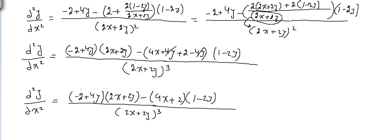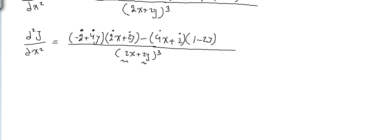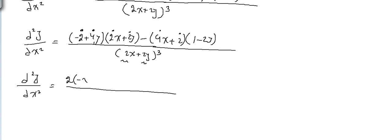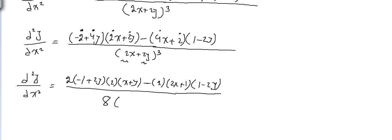We can take 2 as a common factor from each group in the numerator, and from (2x + 2y) in the denominator. Raising 2 to the power 3 gives 8 outside. So d²y/dx² equals 2 times (minus 1 + 2y) times (x + y), and the remaining factor, over 8 times (x + y) to the power 3, because I factored out 2 and raised it to the power 3 to get 2³ = 8.